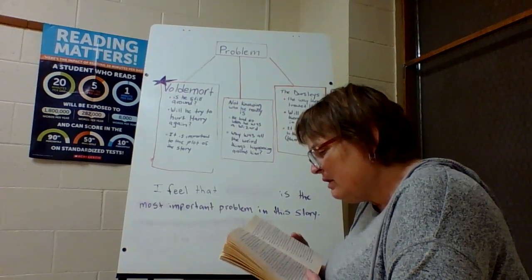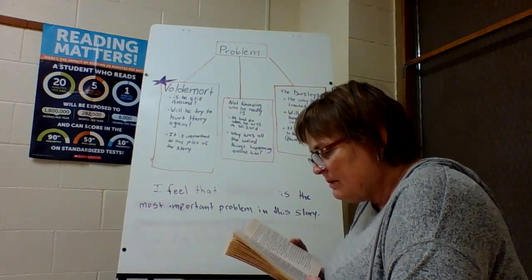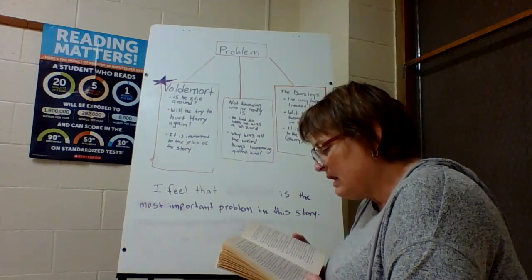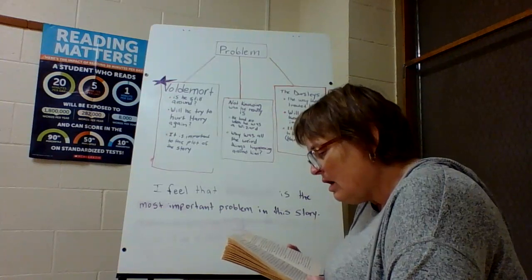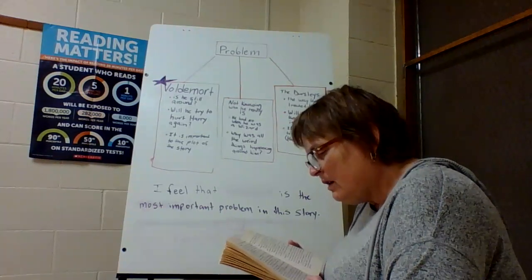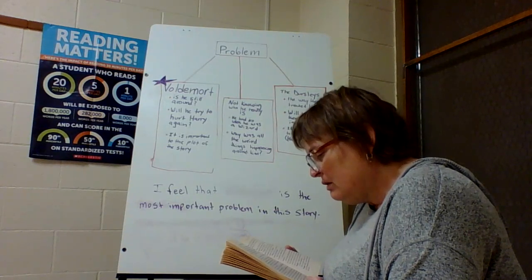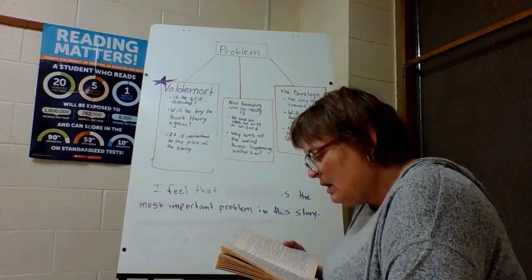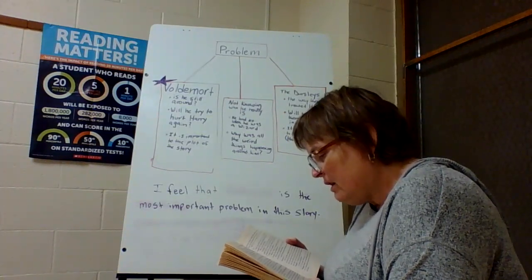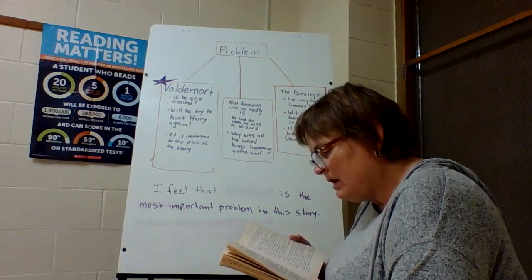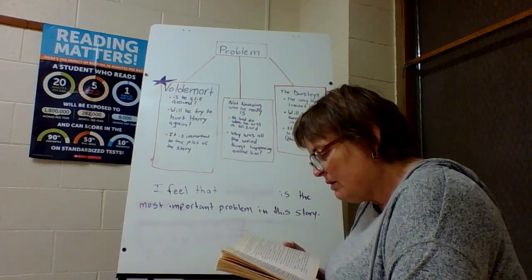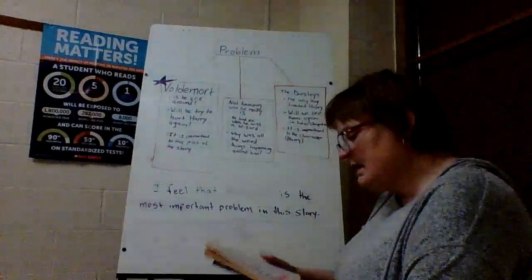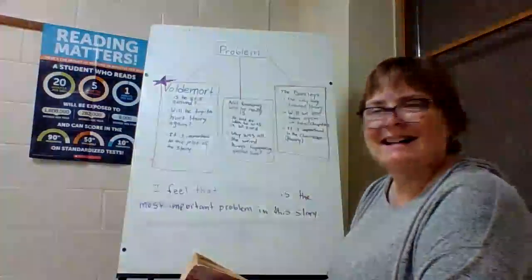Harry wished he could say something more interesting. 'I say, look at that man,' said the boy suddenly, nodding towards the front window. Hagrid was standing there, grinning at Harry and pointing at two large ice cream cones to show he couldn't come in. 'That's Hagrid,' said Harry, pleased to know something the boy didn't. 'He works at Hogwarts.' 'Oh,' said the boy. 'I've heard of him. He's sort of a servant, isn't he?' 'He's the gamekeeper,' said Harry. He was liking the boy less and less every second.